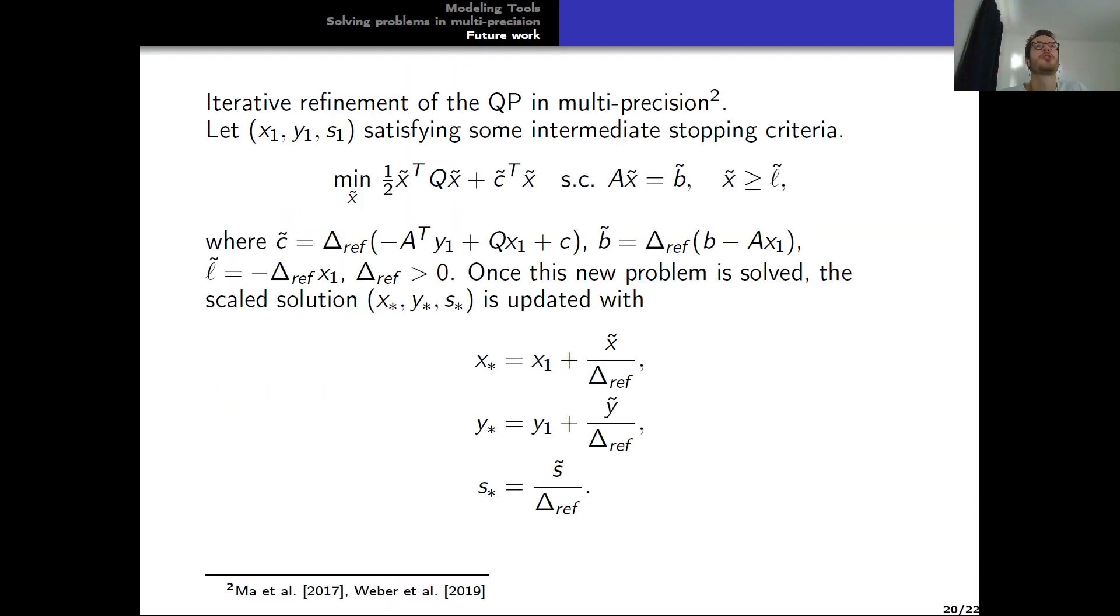Now about some future work. It will be interesting to test a new iterative refinement of the quadratic problem in multi-precision. So let's say that we have x1, y1 and s1, which is a point satisfying some intermediate stopping criteria. Then it is possible to define a new quadratic problem which is like a refined quadratic problem using the current residuals. And then once this new problem is solved, it is possible to update the solution with the final solution, with the solution of this new problem to get a more accurate solution.